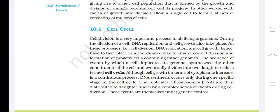Although cell growth, in terms of cytoplasmic increase, is a continuous process, DNA synthesis occurs only during one specific stage in the cell cycle. The replicated chromosomes are then distributed to daughter nuclei by a complex series of events during cell division. These events are themselves under genetic control.